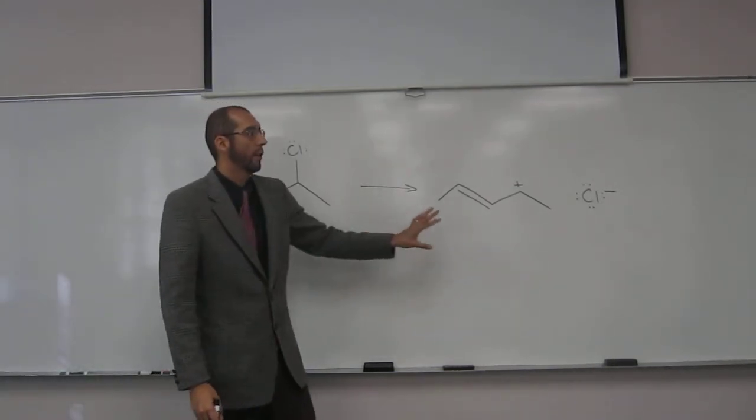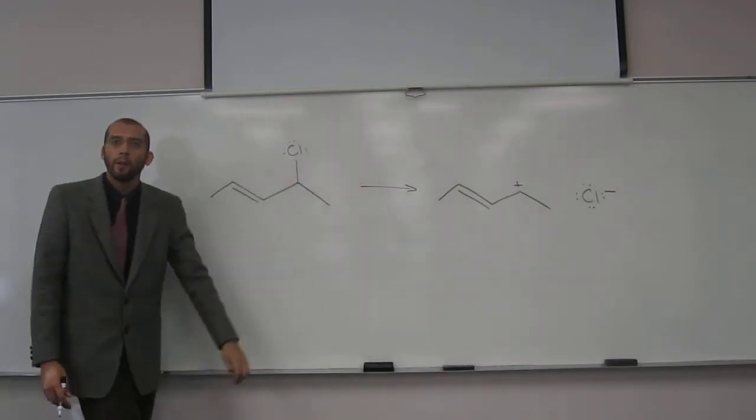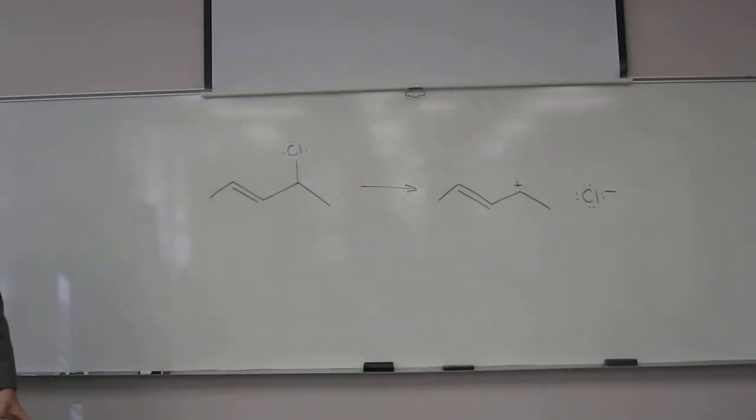So notice one thing turned into two things. We broke a sigma bond so we had a reaction occur. So how would I show the mechanism?